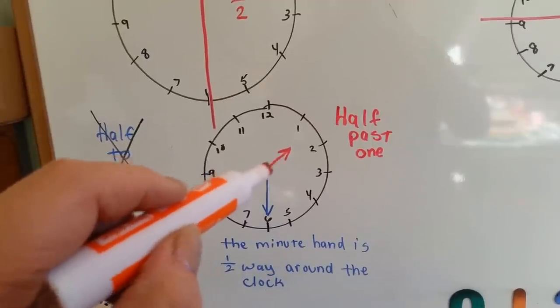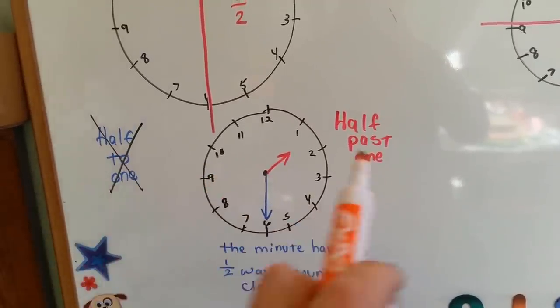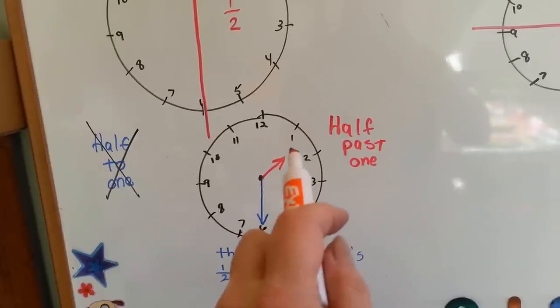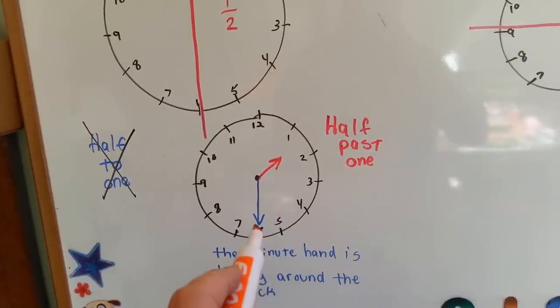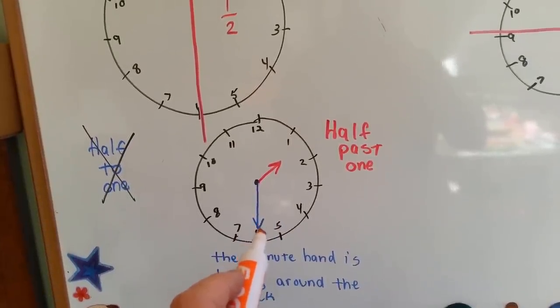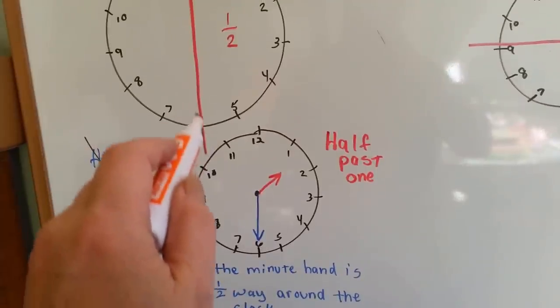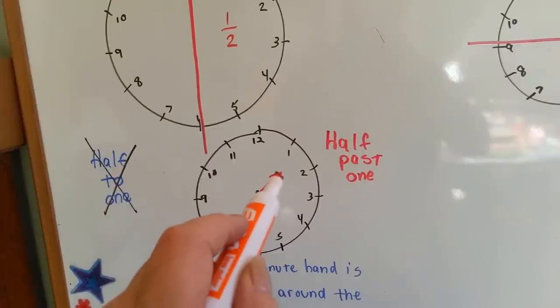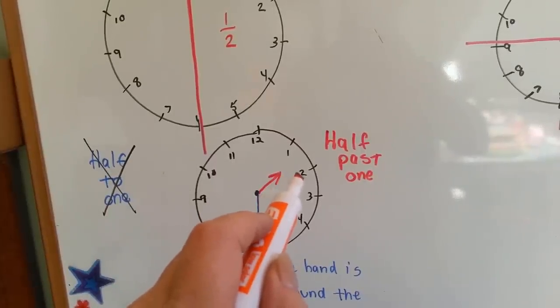So wherever the hour hand is pointing tells you what it's half-past of. In this case, it's half-past 1. When the minute hand gets towards the middle, this halfway point right here or farther, it starts getting closer and closer to the next number.